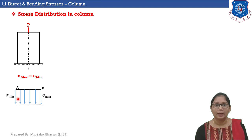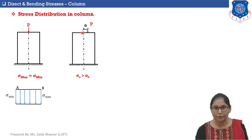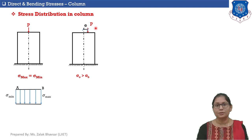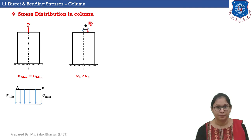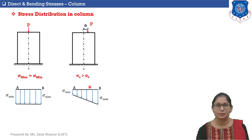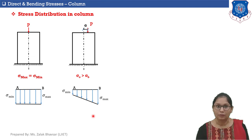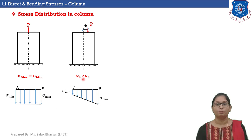In the next case, shifting the axial load slightly away from the axis makes the loading eccentric, so both direct and bending stresses are developed. Since the load is shifted only slightly, σ₀ > σB. We get σmax on edge B and σmin on edge A, with σmin still positive — meaning both edges are subjected to compressive stresses.